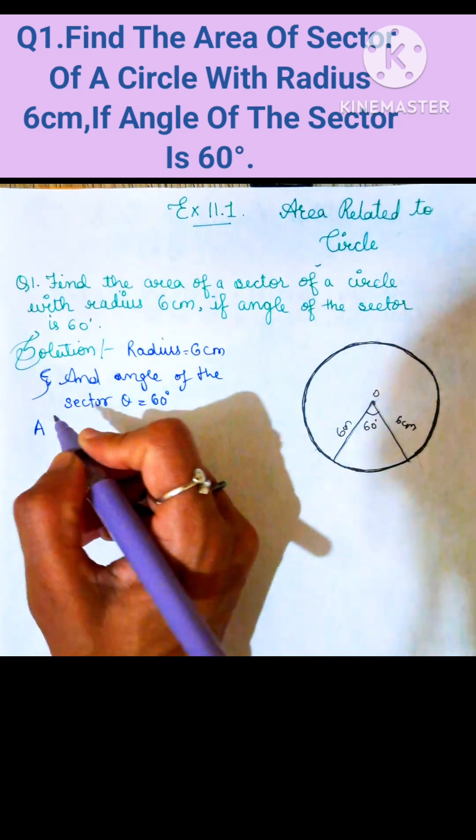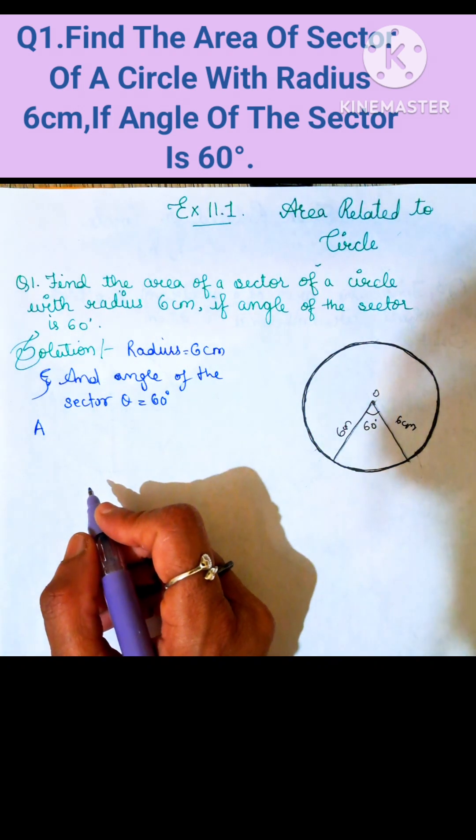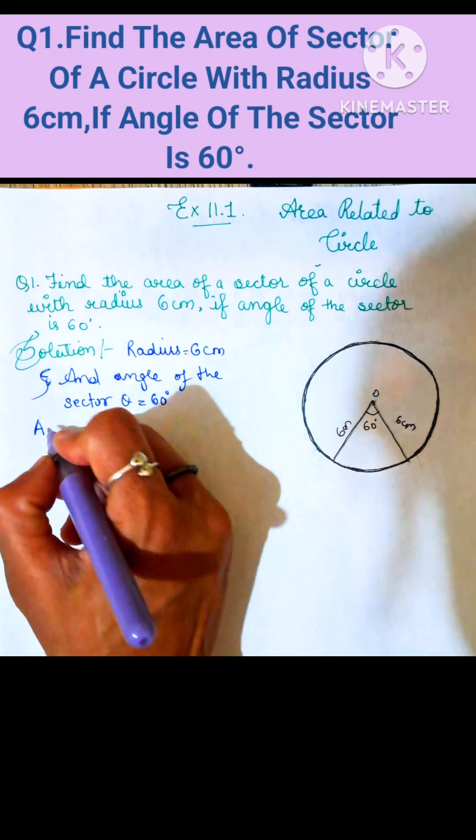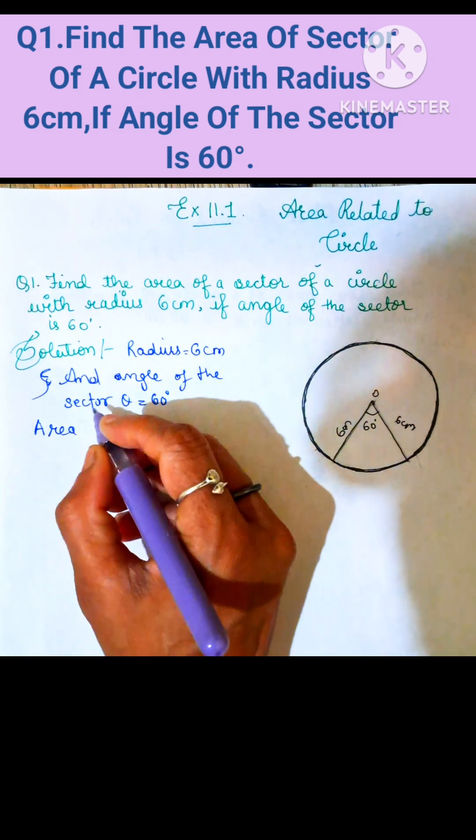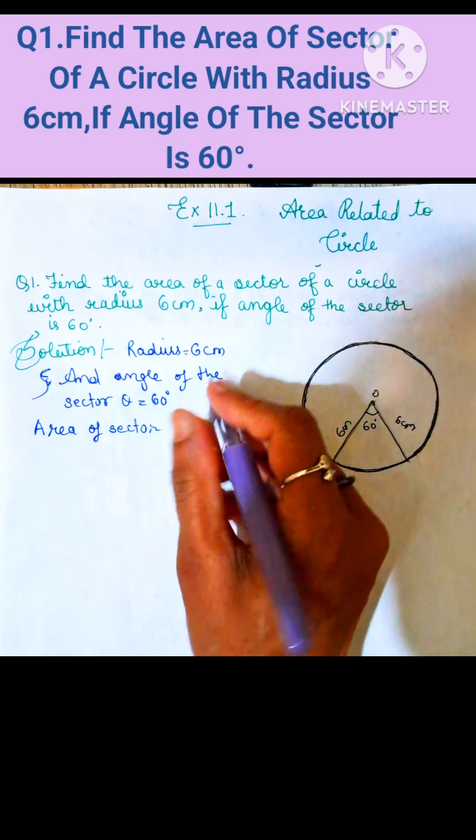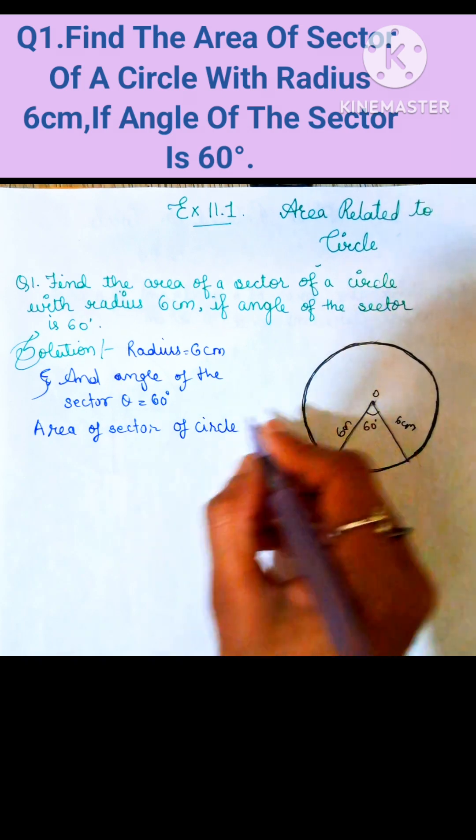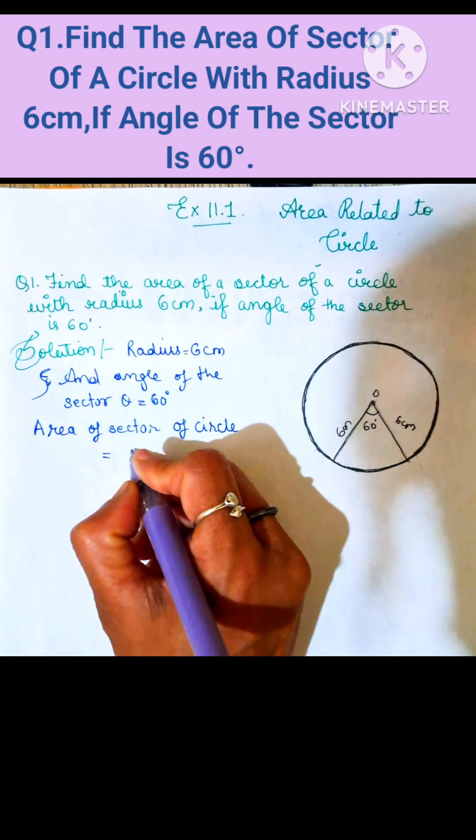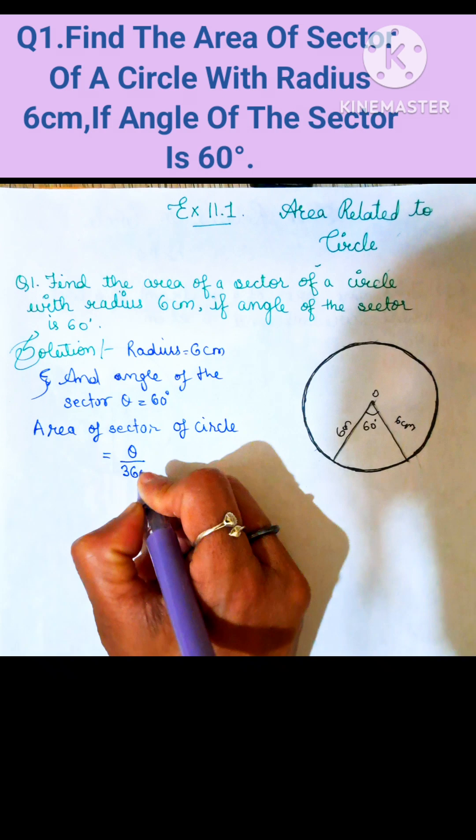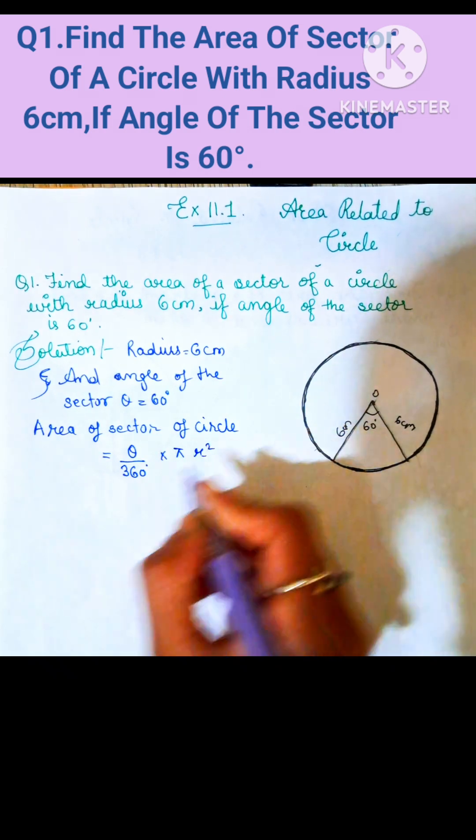The formula of area of sector is theta divided by 360 degrees into pi r square. So write down here: area of sector of circle equals theta divided by 360 degrees into pi r square.